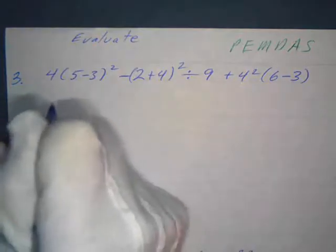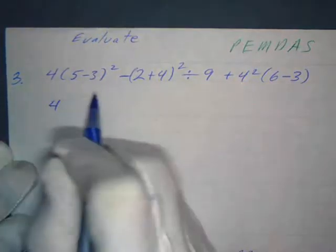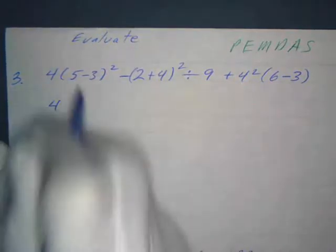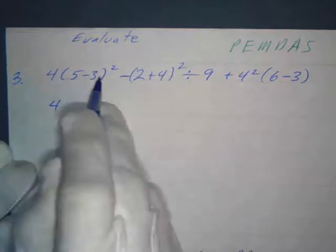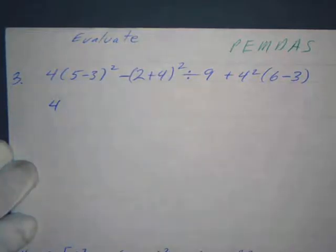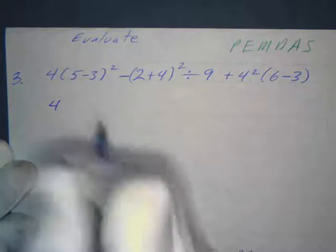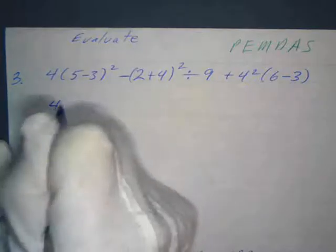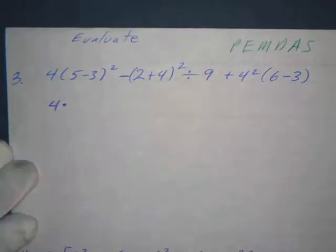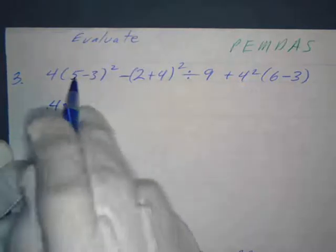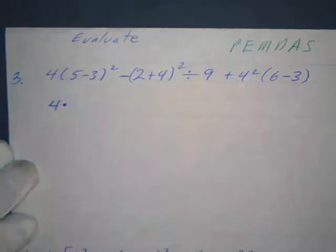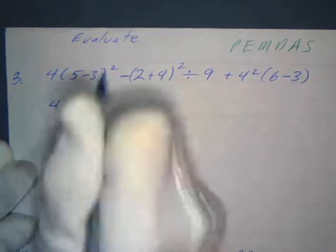We've got four times, and this is what we call multiplication by juxtaposition because it's right next to the parentheses. When I'm going to change this to a number, I better put a dot here so I don't confuse myself. What's five minus three? Well that's two, so that's going to be two squared.